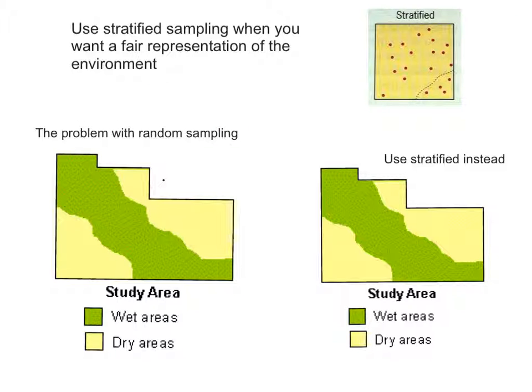You can also use stratified sampling when you have an environment with different features and you want a fair representation of the environment. Let's start with looking at the problem of random sampling first. If you were to do random sampling in this area here, wet areas and dry areas, you may end up through random sampling only sampling these places here and of course you would miss out all of that data from the wet areas.